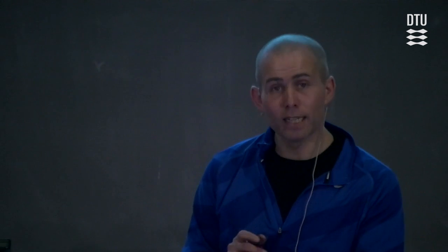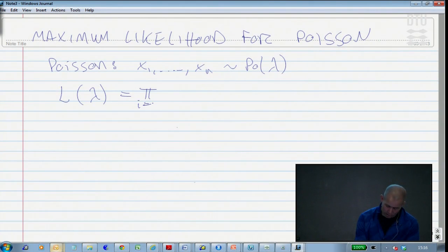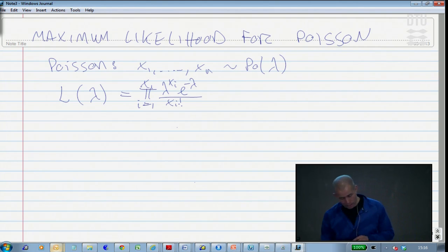So if we have data following a Poisson distribution, Poisson with some intensity lambda, we can write out the likelihood function for lambda by taking the product of the individual Poisson probabilities. That is the probability of getting x1 in the first one, x2 in the second one, and so on. It's simply the Poisson probabilities multiplied together. Here is the Poisson probabilities: lambda to the xi, exponential to minus lambda, divided by xi factorial.